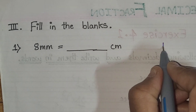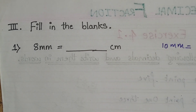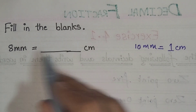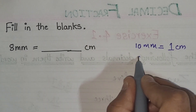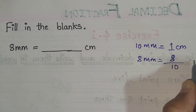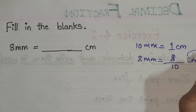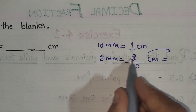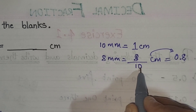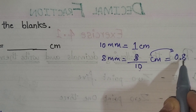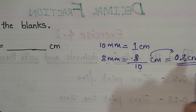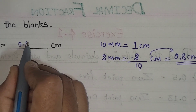As we know, 10 millimeters equals 1 centimeter. So we write 8 millimeters equals 8/10 centimeters. In decimal form, we write the numerator 8 as-is, and since there is one zero, we put the decimal point after 1 digit. There is no number before the decimal, so we write 0. The answer is 0.8 centimeters.